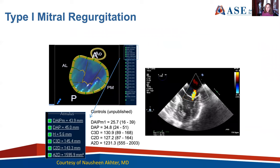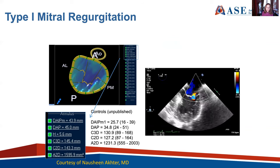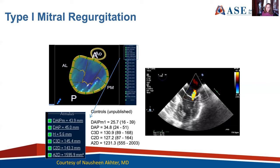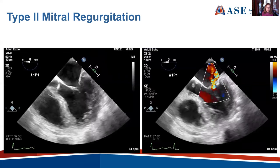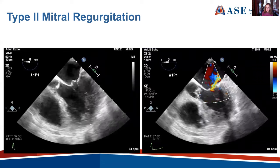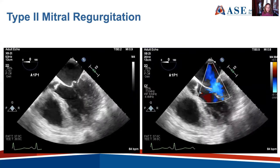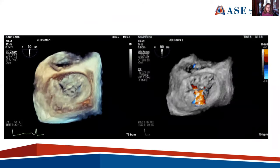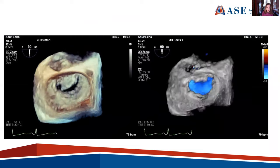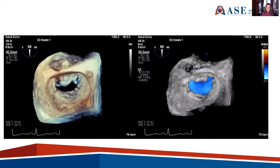Here is a patient with type 1 mitral regurgitation because of a dilated annulus. This study from my colleague Dr. Nasheen Octor demonstrated using 3D echo that the annulus in patients with type 1 mitral regurgitation is much larger than in controls. Type 2 mitral regurgitation is myxomatous disease — this individual has a flail anterior leaflet with significant mitral regurgitation and was referred for surgical correction. The 3D images demonstrate the flail A2 scallop with the ruptured cord and associated mitral regurgitation.